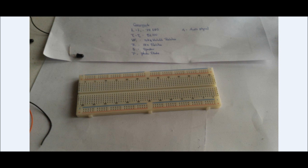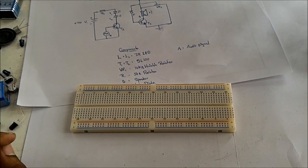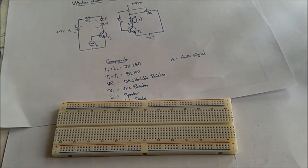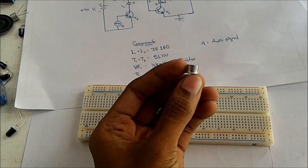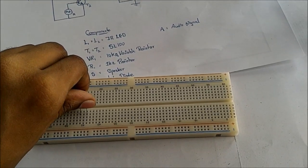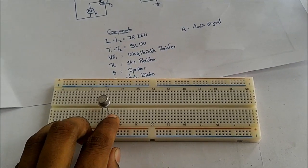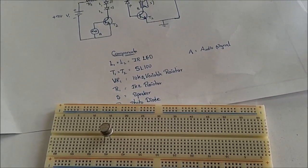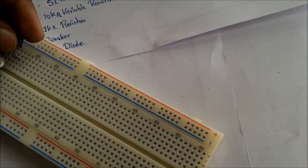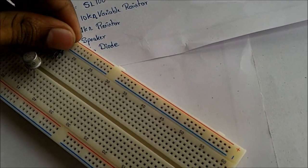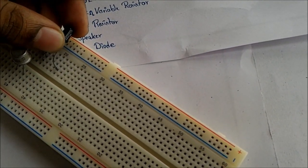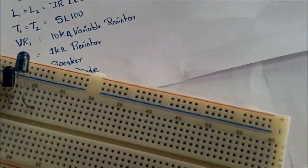Now let's start making the circuit. First, I'm building the transmitter part on the breadboard. I'm starting with the transistor — this is the emitter, this is the base, and this is the collector. I'm connecting the IR LEDs to the collector. Check the polarities while placing them — both should be connected in series. Now I've placed both IR LEDs.